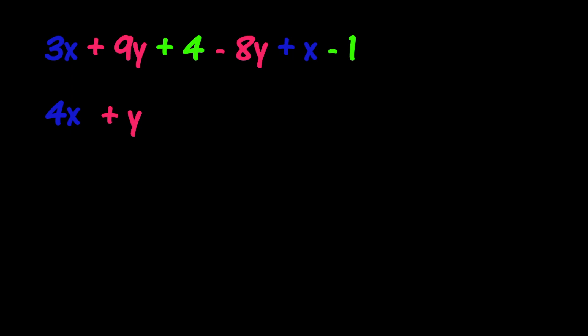Lastly, we will combine the constants. 4 minus 1 is 3. And our simplified expression is 4x plus y plus 3.